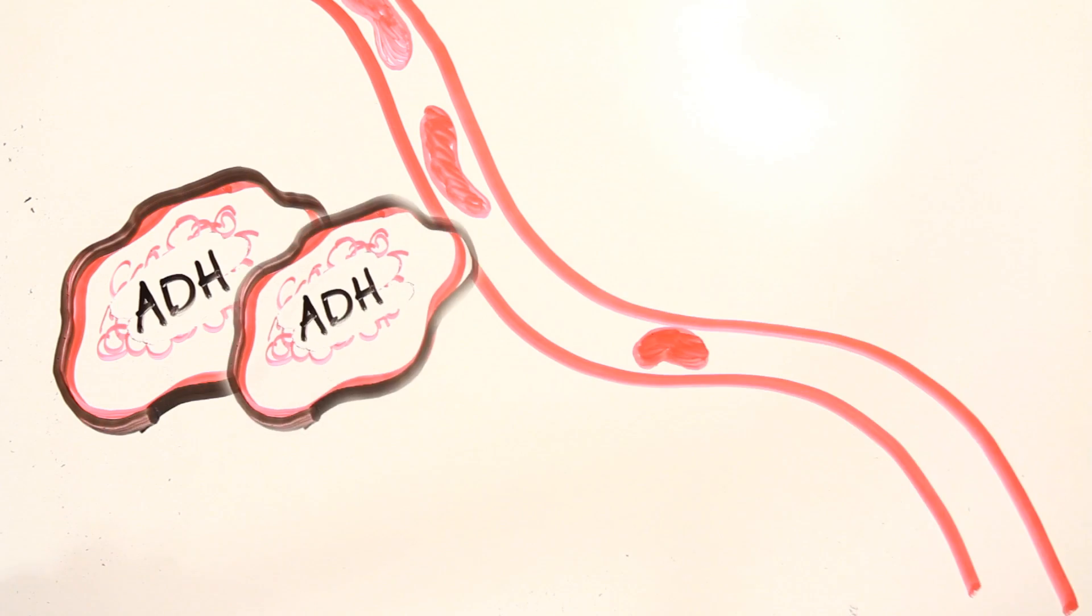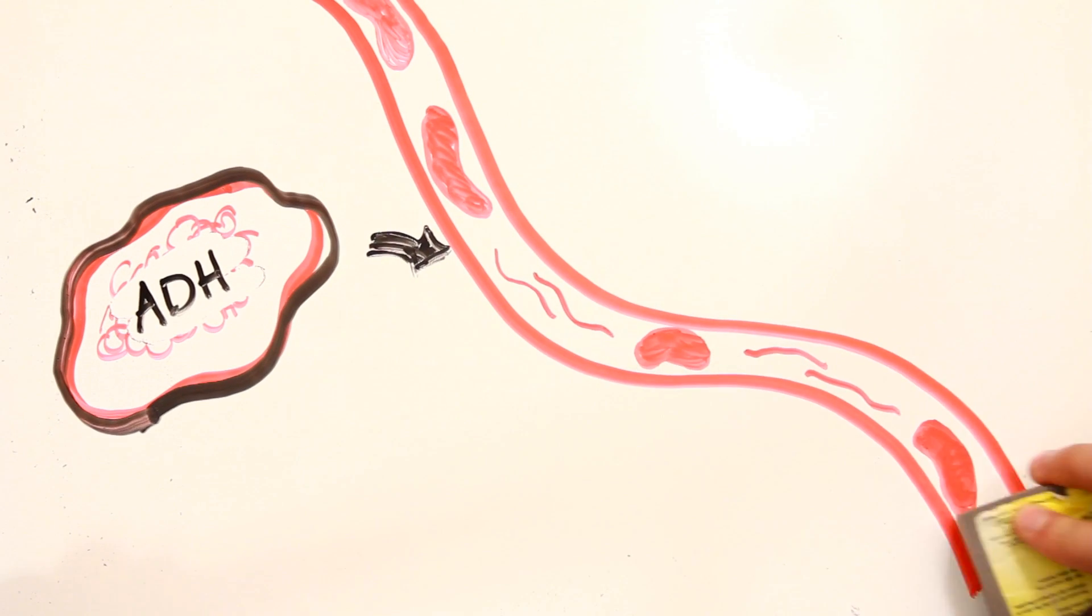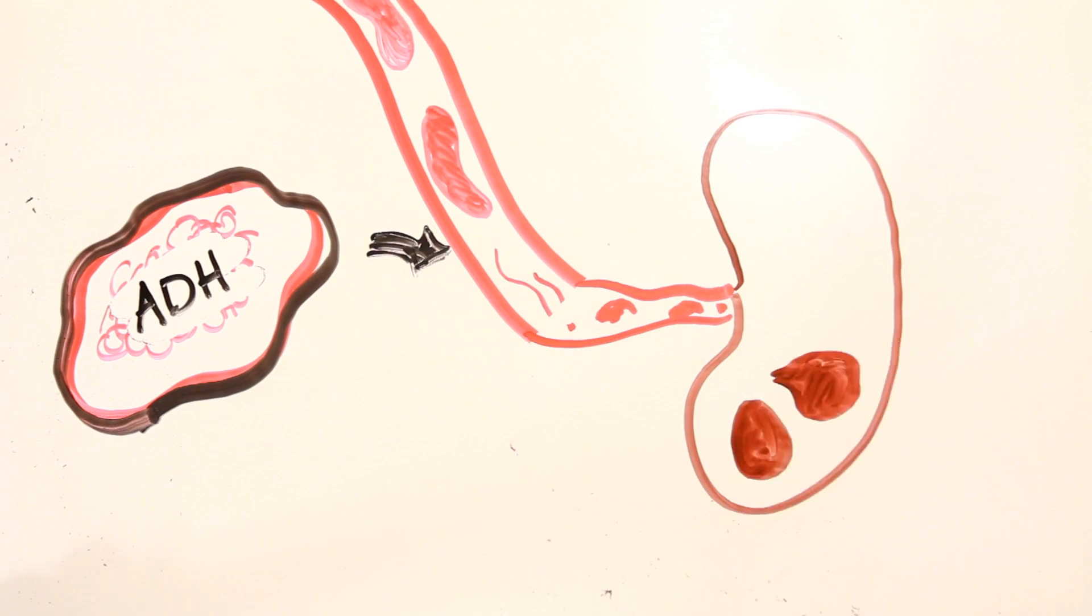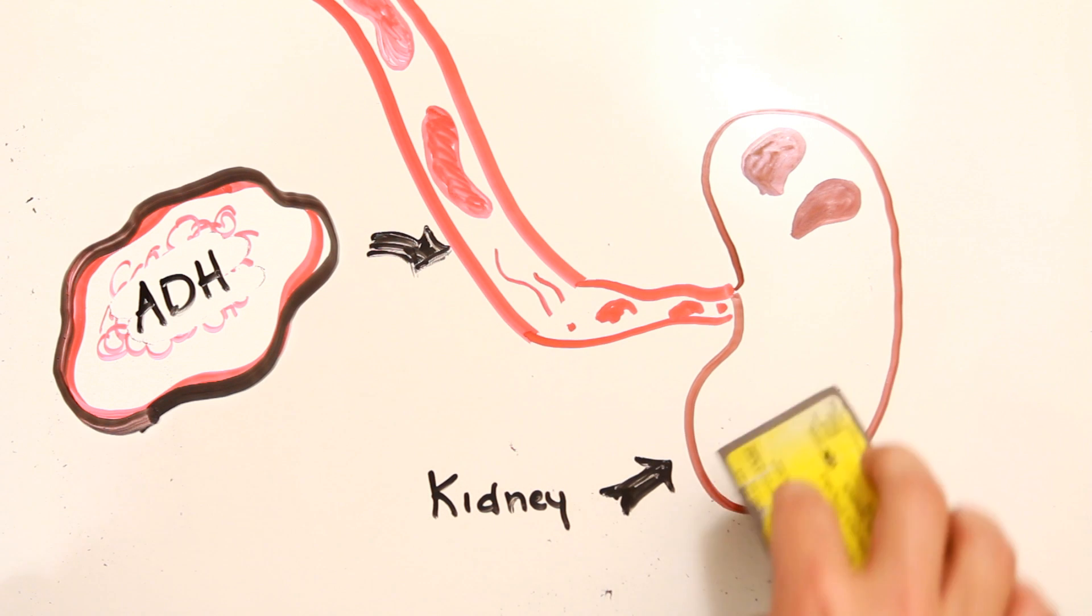ADH is secreted by the pituitary gland, enters the bloodstream, and is then carried to the kidney. The kidney, among other things, is responsible for monitoring how much water is in your body, and whether or not you can afford to get rid of it.